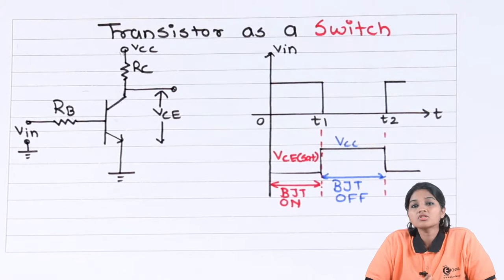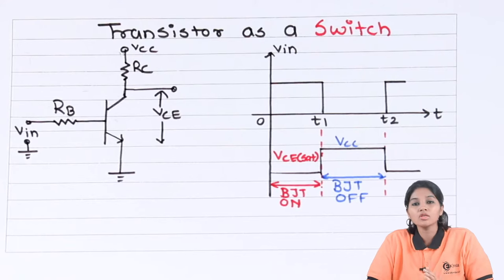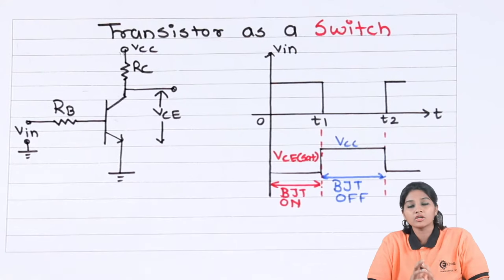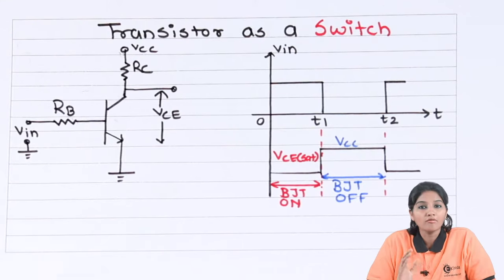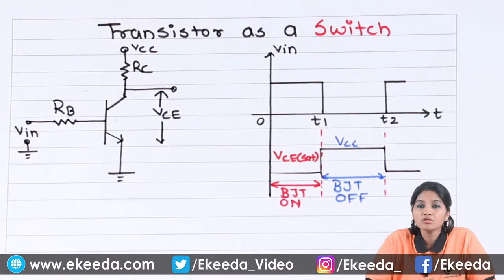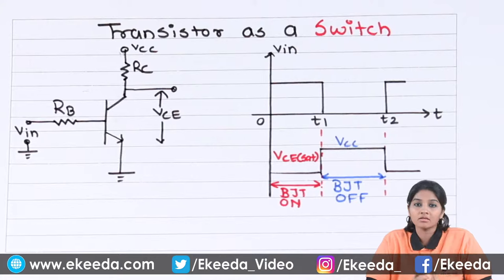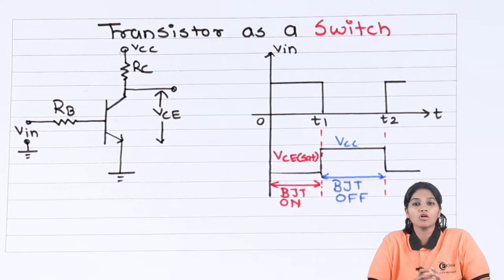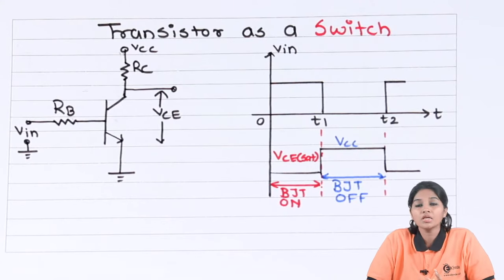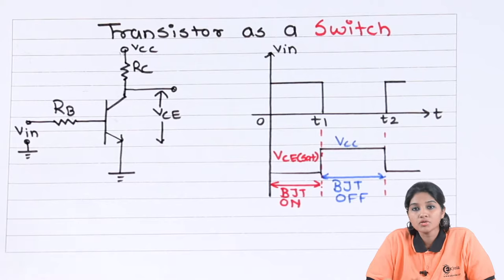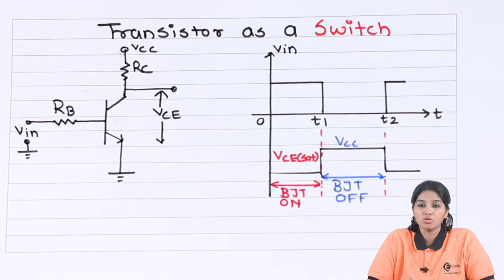Whenever a transistor is used as an amplifier, it always operates in the active region. And when a transistor is used as a switch, it operates either in the saturation region or in the cutoff region, based on whether it acts as an open switch or as a closed switch.